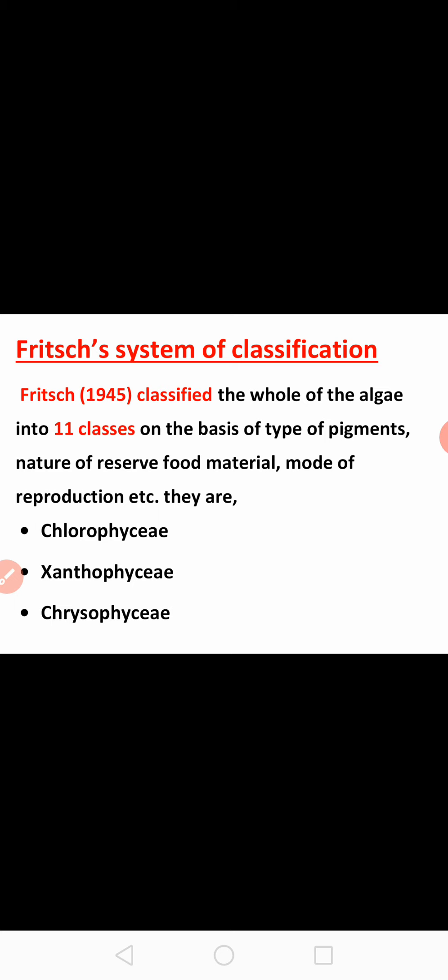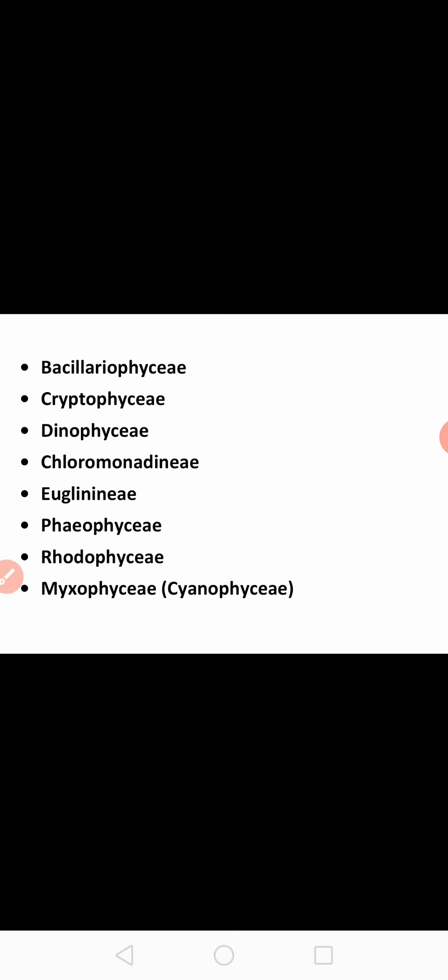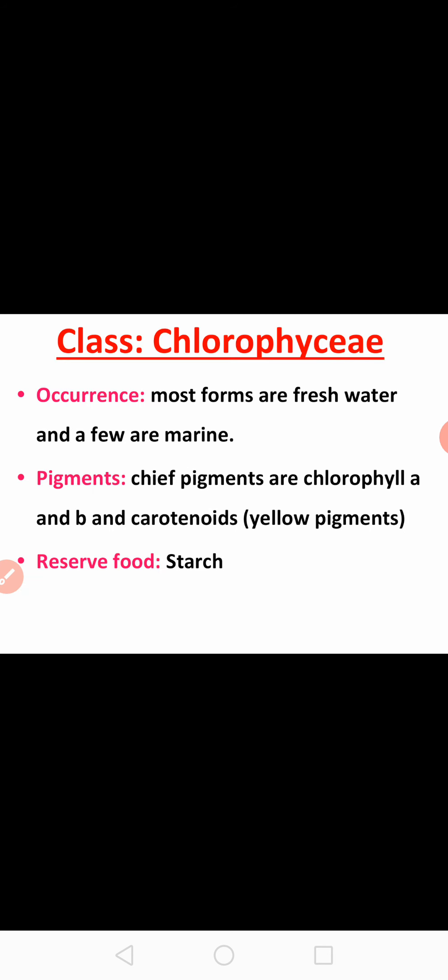According to the Fritz system of classification, algae includes 11 classes: Chlorophyceae, Xanthophyceae, Chrysophyceae, Bacillariophyceae, Cryptophyceae, Dinophyceae, Chloromonadine, Eugleninae, Phaeophyceae, Rhodophyceae, and Myxophyceae. Now let us discuss about the different classes of algae one by one in detail.